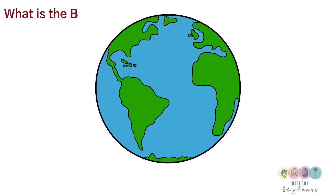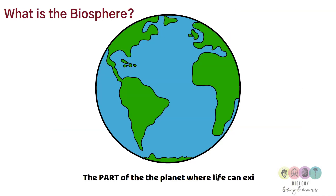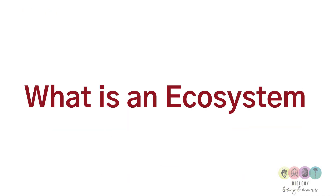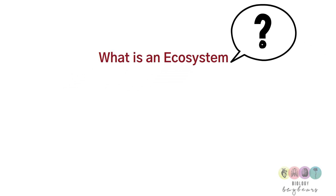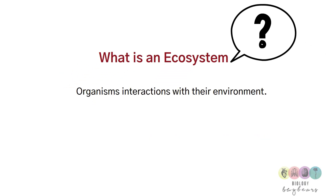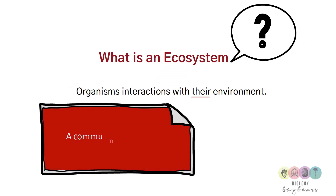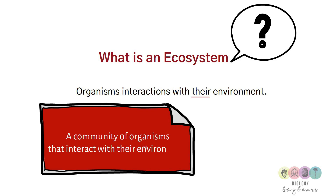What is the biosphere? The biosphere is the part of the planet where life can exist. Next, what is an ecosystem? An ecosystem is a community of organisms that interact with their environment.